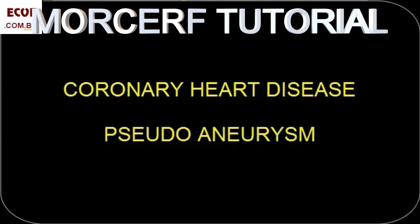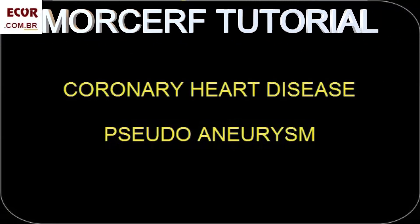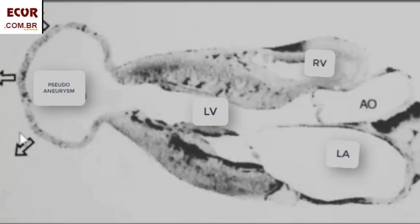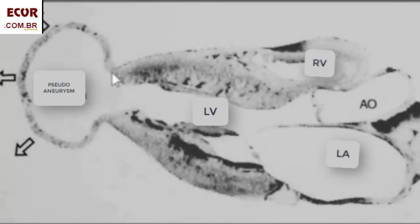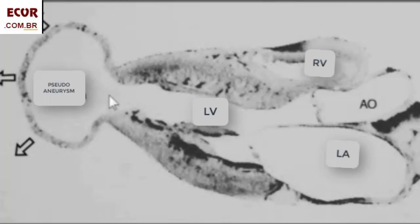Now let's see the pseudoaneurysm of left ventricle. What is a pseudoaneurysm? It's a situation where the patient had a myocardial infarction, and this infarction was big enough to produce a local pericarditis. This pericarditis had an inflammatory fibrosis on that infarcted myocardium that happened to rupture and would cause a hemopericardium and a cardiac tamponade, but was restrained by the adherence of the pericardium.